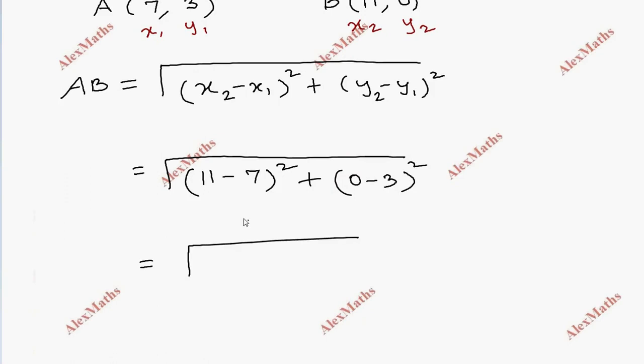This is root of 4 square, and minus 3 whole square. When we square, this becomes positive. This is 16 and this is 9. This is total root of 25, which is equal to 5.